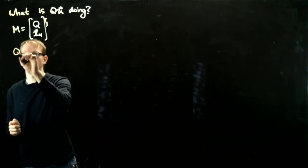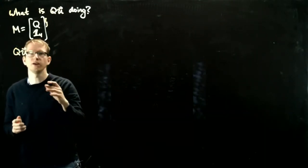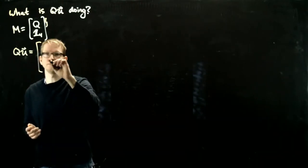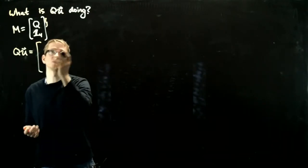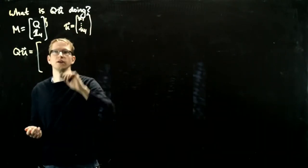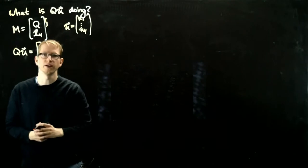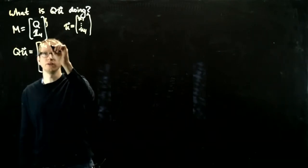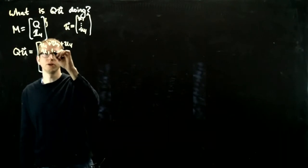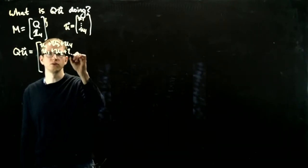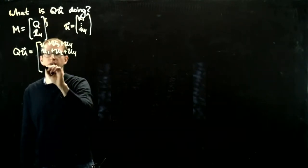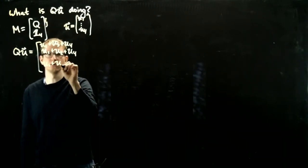So if we take QU and apply that matrix q that was left over, the vector we get in terms of the entries of u, where u is u1 through u4, the entries of this vector are going to be u1 plus u3 plus u4, u1 plus u2 plus u4, and the third entry is going to be u1 plus u3.